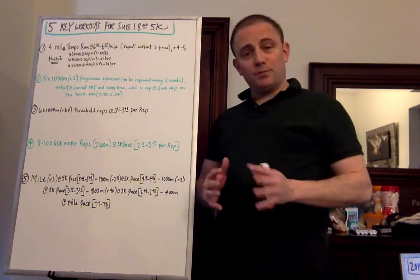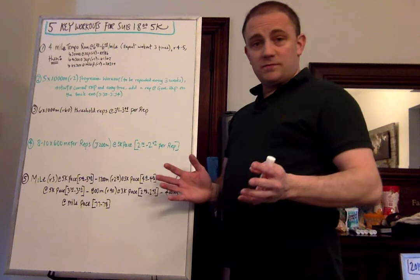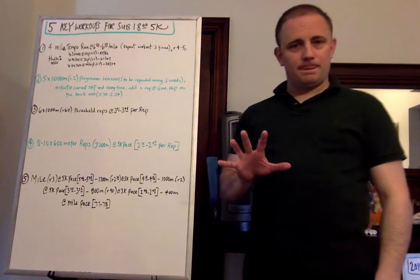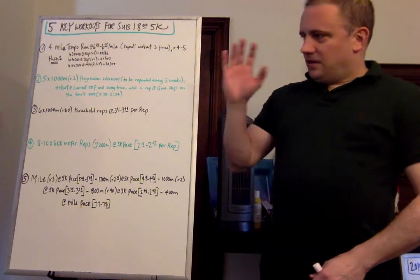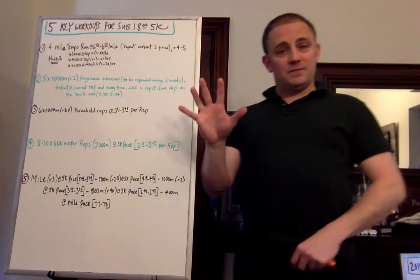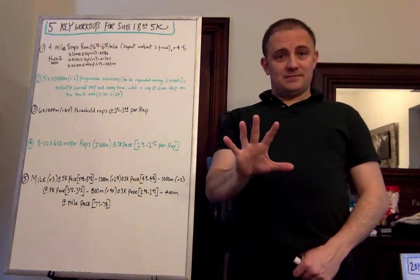Five times a thousand. I call it a progression workout. Now this is a workout I like to do actually in cross-country, but you can do it training for 5K as well. This is a workout I actually would do five times. First time, you do all five thousand meter reps with a two-minute recovery at your current 5K pace.